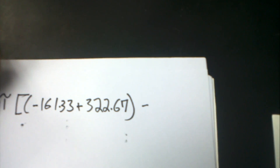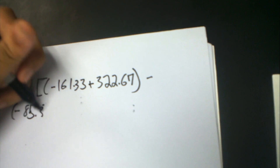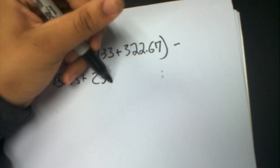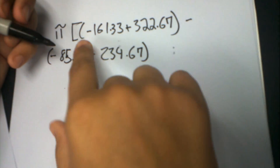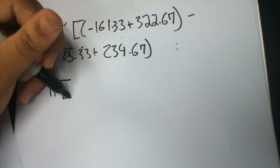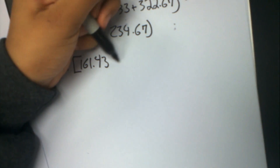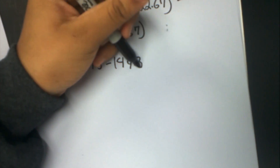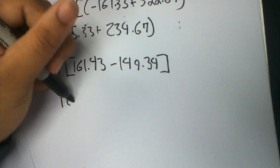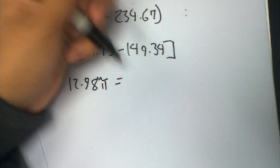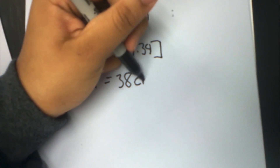If you solve this, you get pi times negative 161.33 plus 322.67 minus negative 85.33 plus 234.67. Simplifying those gives pi times 161.43 minus 149.34, which becomes 12.98 times pi, and that is equal to approximately 38 centimeters cubed. And that is Volume 2.